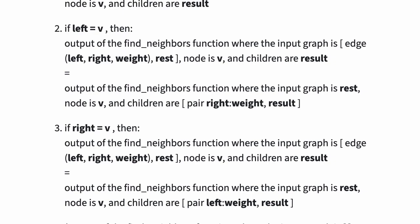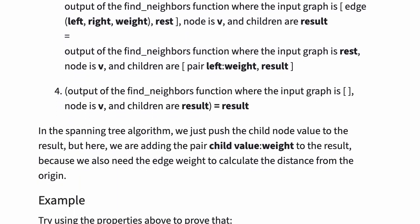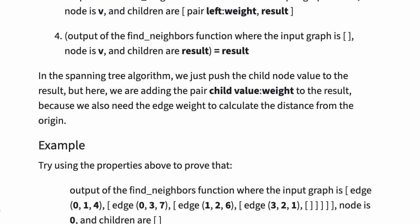If left is equal to v, then we pop from the input graph and we push a new pair with the right value and the weight. If right is equal to v, then we again pop from the input graph and we push a new pair to the children with the values left and the weight. If the input graph is empty, then the output of the function is the result.